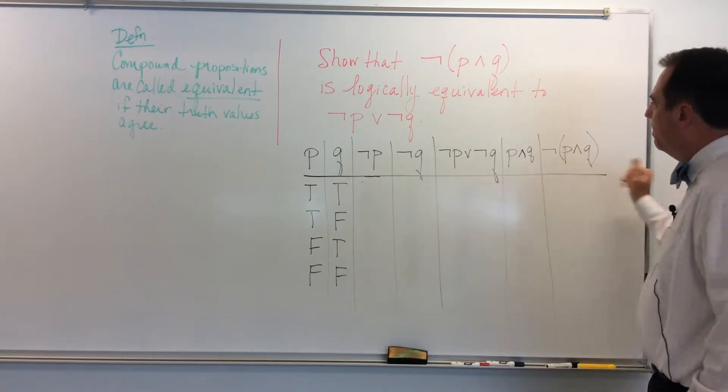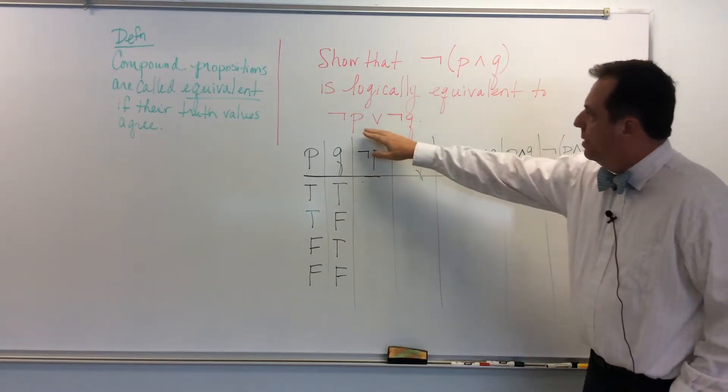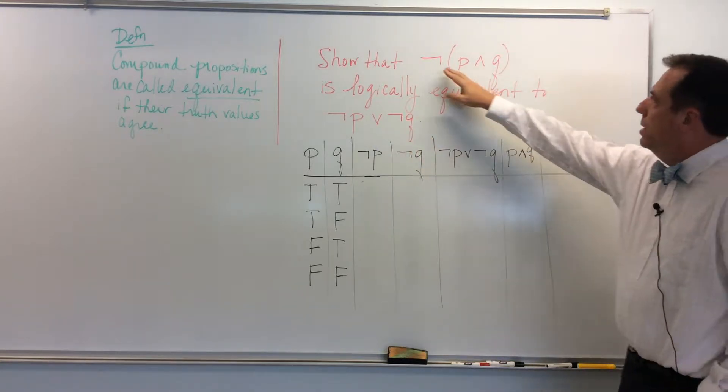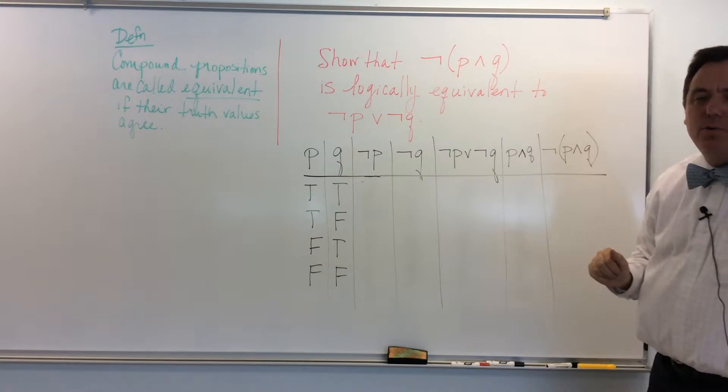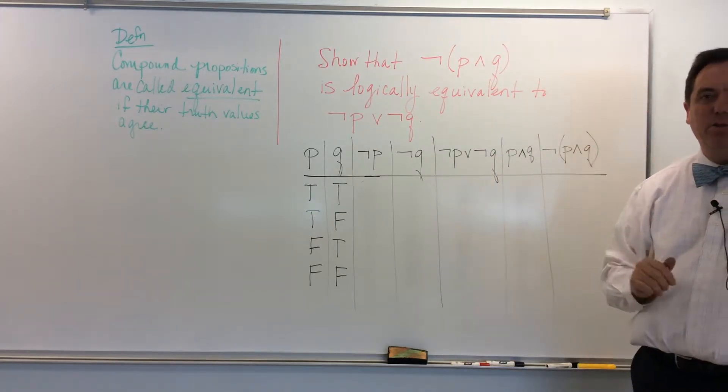So I've set up the truth table, and we're going to end up comparing this column, not P or not Q, to this column, not P and Q, to figure out whether or not these two columns agree in truth values.